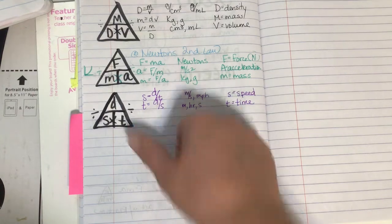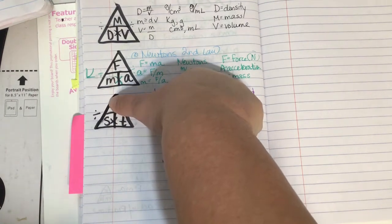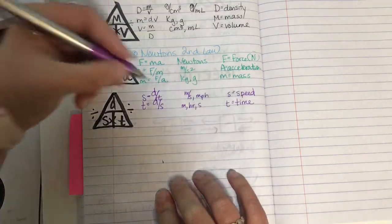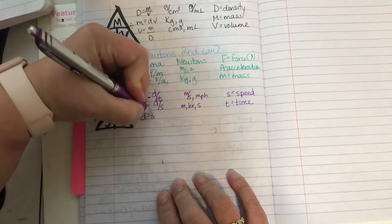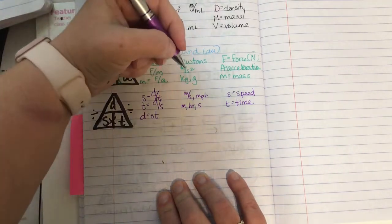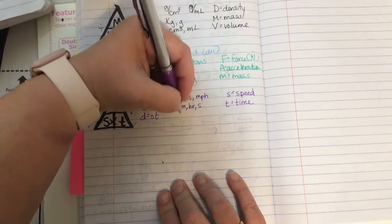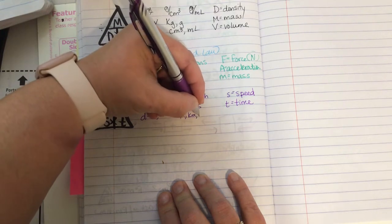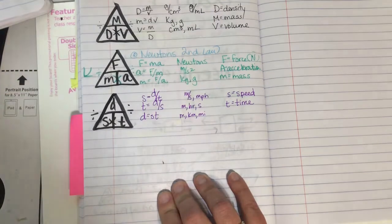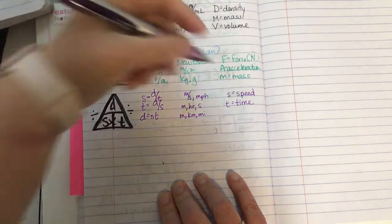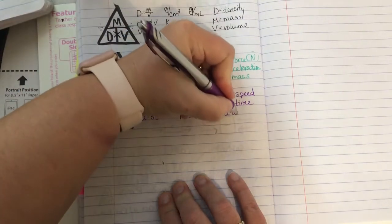And then finally, I could solve for distance. So distance would be speed times time. So D equals S times T. Distance could be meters, kilometers, miles. And the D here stands for distance.